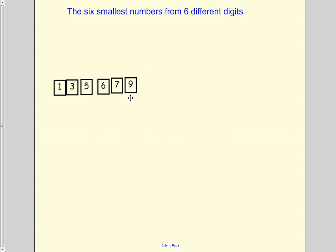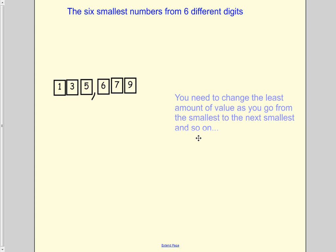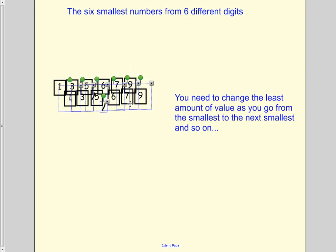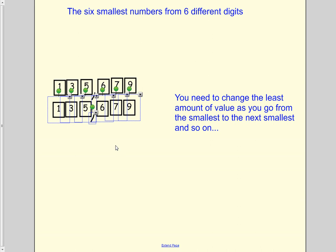So that would be 135,679. And then what I want to do is start rearranging them, but I want to rearrange them by changing the least amount of value each time.